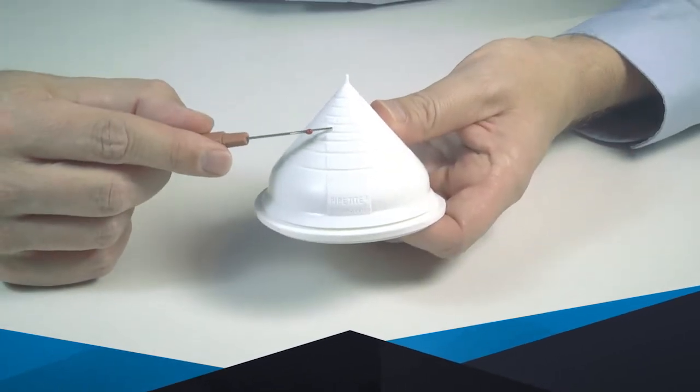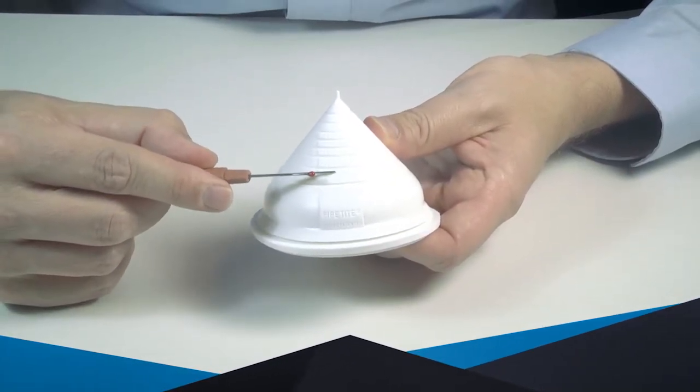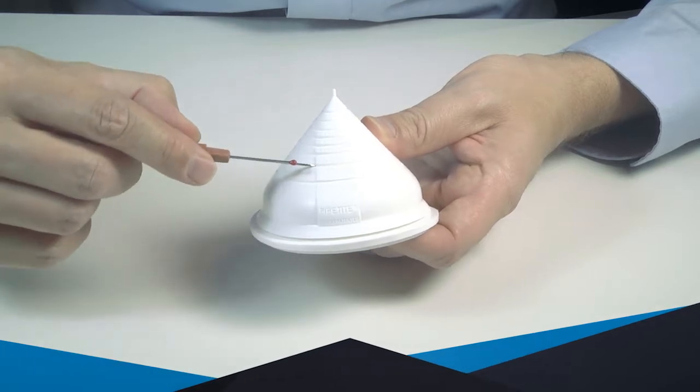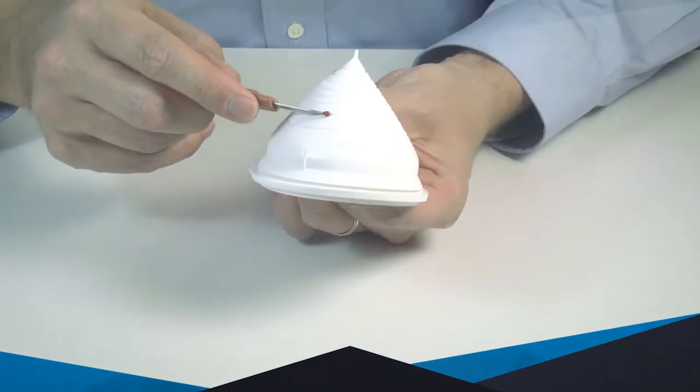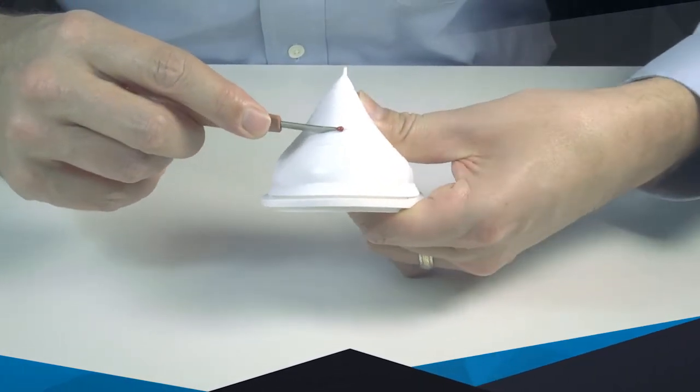Once you have located the correct cutting line, use the tip of the Pipetite cutting tool to pierce the product. Then use the red ball to trace the line while you rotate the cone 360 degrees.